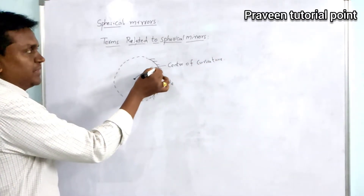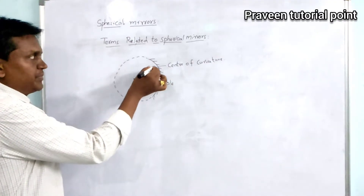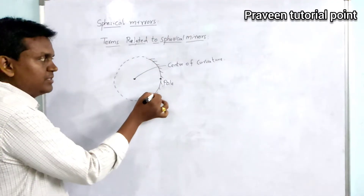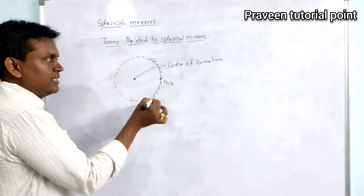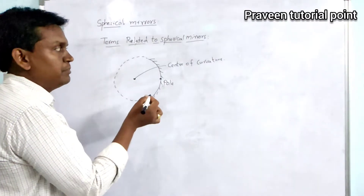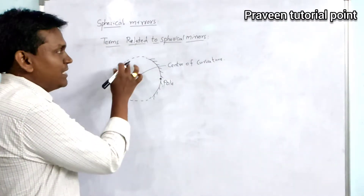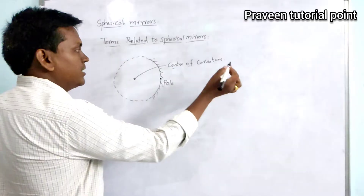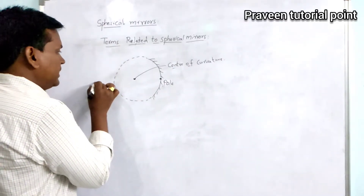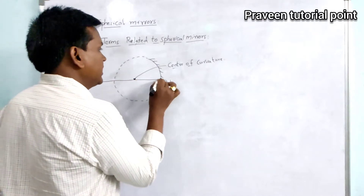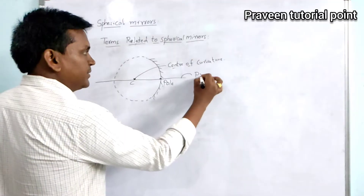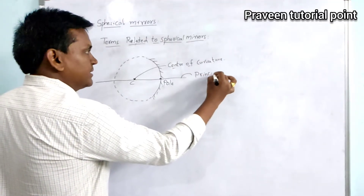Actually, this is a mirror, and we are imagining it as a sphere. The midpoint of that imaginary sphere is called the center of curvature. Now, if you draw a line joining this center of curvature and the pole, that line is called the principal axis.